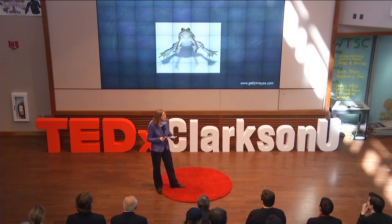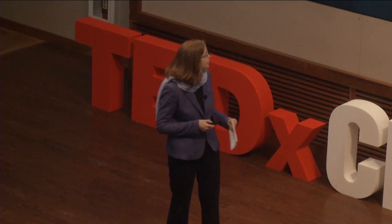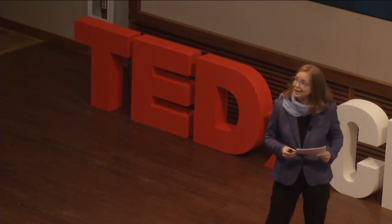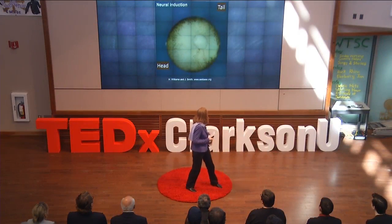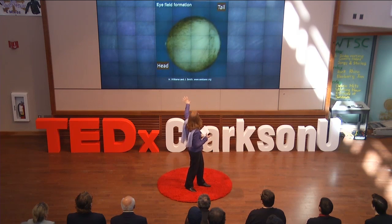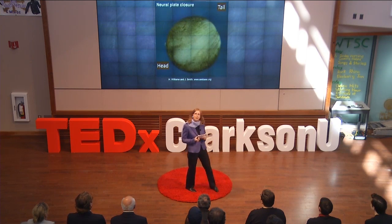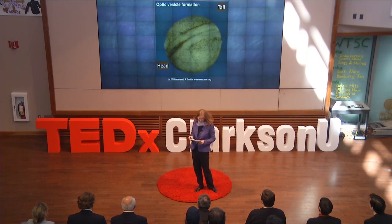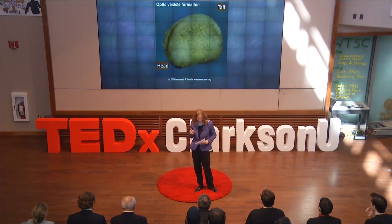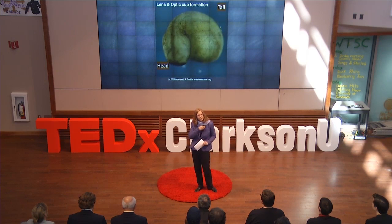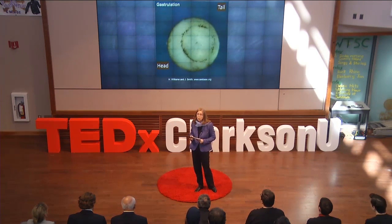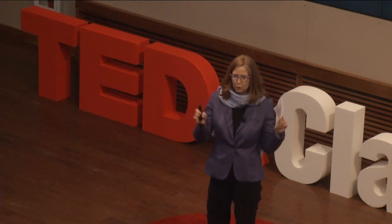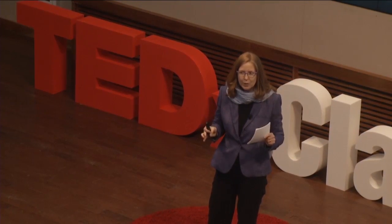Xenopus has been used by developmental biologists for over a hundred years because they're really great to study how organs develop. I brought a movie here to show you how quickly they develop. This is one of the advantages of using the Xenopus system. The movie loops through in about 24 seconds and covers about 24 hours of development. From the time of fertilization to a fully functional mature eye, it takes about three and a half days.